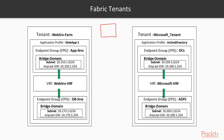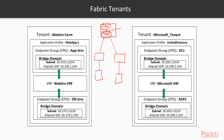In a traditional network we have a core, a distribution layer, and an access layer where VLANs live. Routing happens at the core switch — all default gateways or SVIs are configured there. Here's the problem with this architecture: you cannot isolate VLANs in a traditional campus or three-tier design because the core has all the routing for all those VLANs.